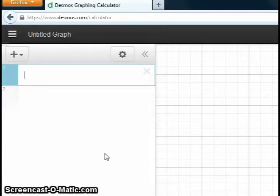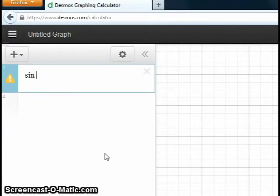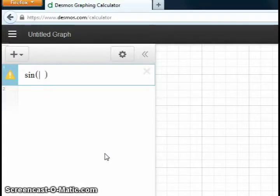Desmos also recognizes the names of common functions and Greek letters such as pi, theta, square root, and the trigonometric functions. If you want to type in the sine of pi times theta quickly, just type in sin with an opening parenthesis, then type in pi for pi and t-h-e-t-a for theta and close the parenthesis.